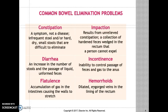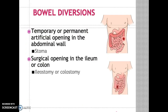Bowel diversion can be a temporary or permanent procedure. It is an artificial opening in the abdominal wall whereby the surgeon creates a stoma. The location of the stoma — whether it is a colostomy — will determine the consistency of the stool.